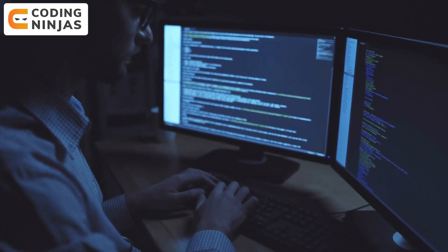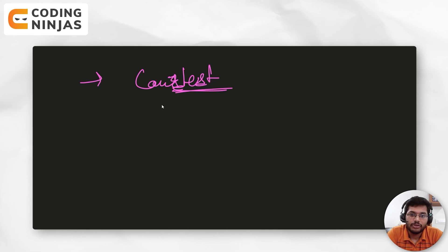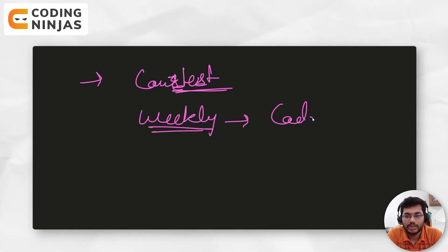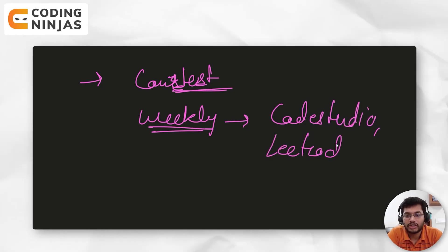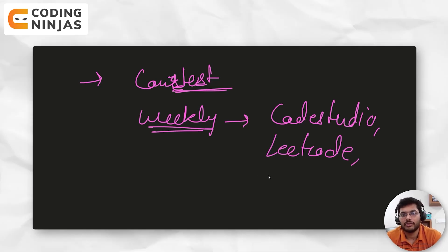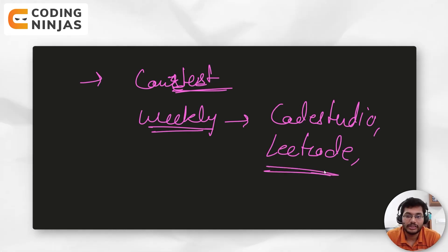In online assessment rounds and coding contests, you've learned DSA but now you need to become a fast coder. You should give weekly contests available on various platforms including Code Studio by Coding Ninjas, LeetCode weekly and bi-weekly contests, and you can also start with Codeforces rounds — though those are more for competitive programming. If you're preparing for DSA interviews, LeetCode or Code Studio are the right platforms.